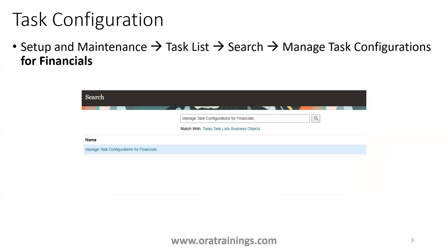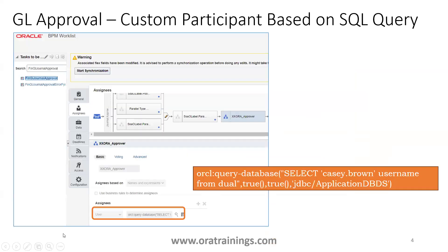We need to understand the name of the GL workflow. Navigate to Setup and Maintenance task list, search for 'Manage Task Configuration for Financials', and then search for the specific task name: FinGL Journal Approval. Click on that, then click Edit.